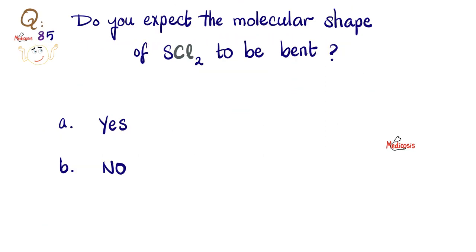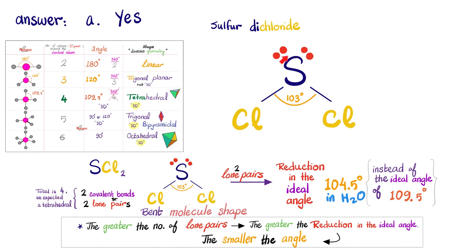Next, do you expect the molecular shape of SCl2 to be bent? Yes or no? The answer is yes. Look at sulfur in the periodic table — it's just below oxygen. Sulfur has 6 valence electrons, just like oxygen in the water molecule. It makes a bond with each chlorine atom, using 4 of its 6 electrons, leaving 2 lone pairs. Since we have lone pairs, we get angle distortion — lone pairs lead to reduction in the ideal bond angle.